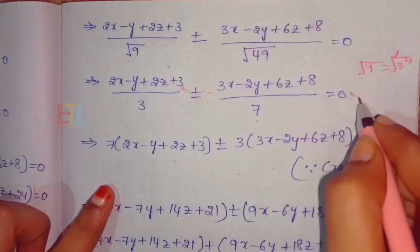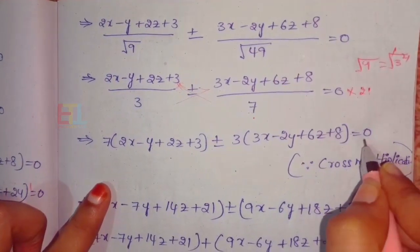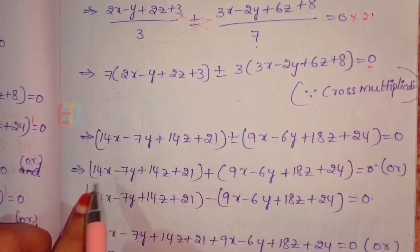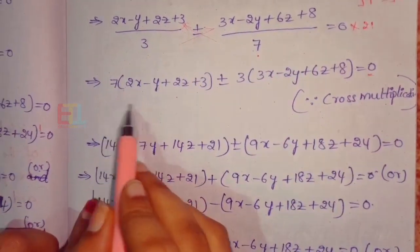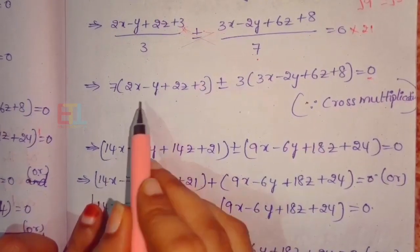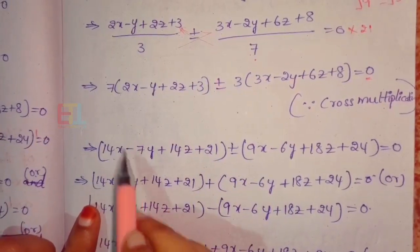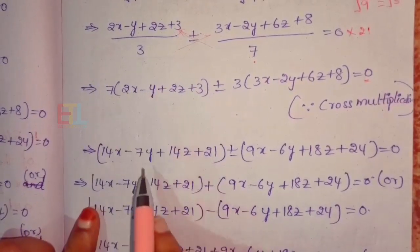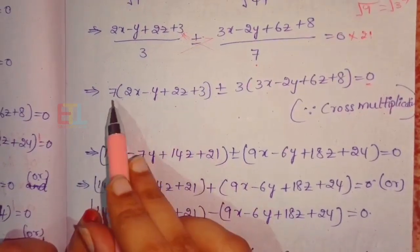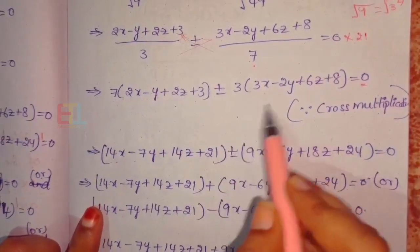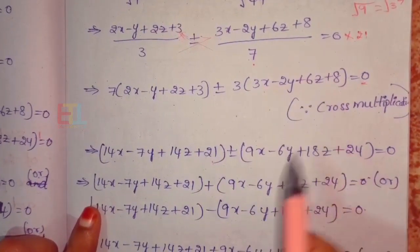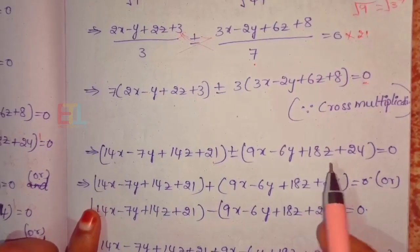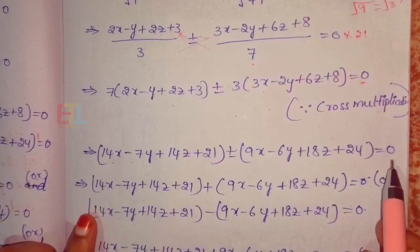Multiplying out: 7 into 2x gives 14x; 7 into 1 gives 7; 7 into 2 gives 14; 7 into 3 gives 21. And 3 into (3x minus 2y plus 6z plus 8) gives 9x minus 6y plus 18z plus 24, equal to 0.